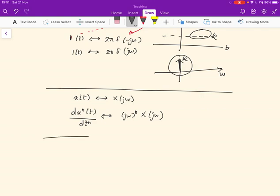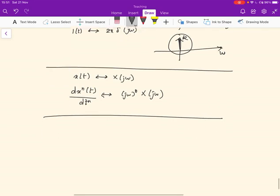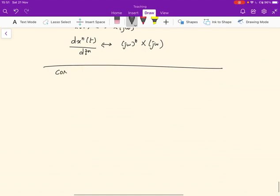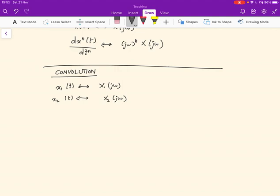So the last property we're going to use is the convolution property. And this is quite important. It says that if x₁(t) corresponds to X₁(jω), and x₂(t) corresponds to X₂(jω), and y(t) corresponds to Y(jω).